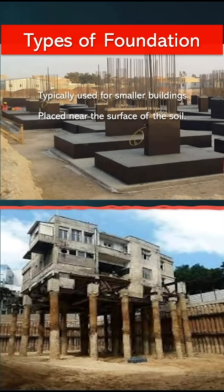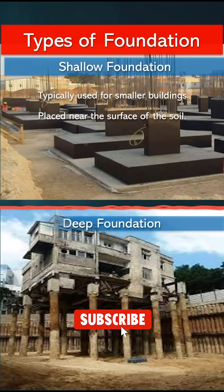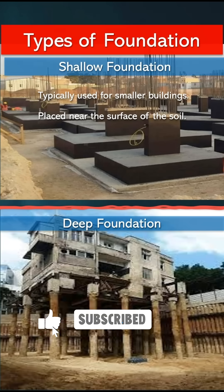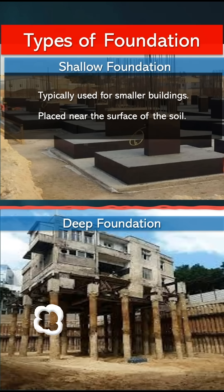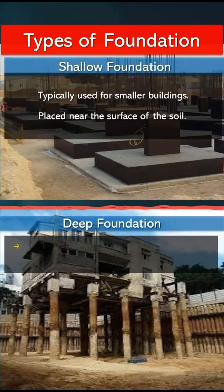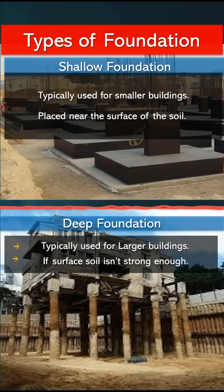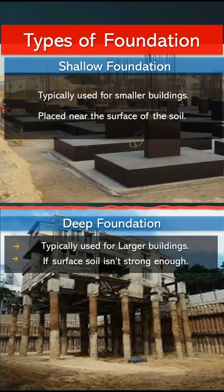Generally, foundations are categorized into two main types: shallow foundation and deep foundation. Shallow foundations are typically used for smaller buildings and are placed near the surface of the soil, while deep foundations are used for larger structures or when the surface soil isn't strong enough.